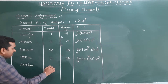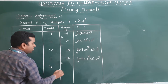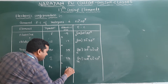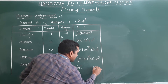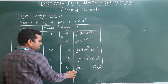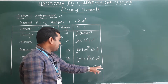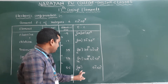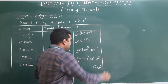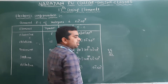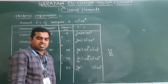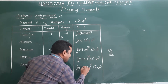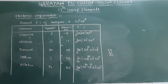The last element is astatine, symbol At. Add 32 to get atomic number 85. The configuration includes [Xe] 4f¹⁴ 5d¹⁰ 6s² 6p⁵. Xenon is 54; 54 + 2 = 56, + 5 = 61, leaving 24 electrons — 10 go into 5d and 14 into 4f orbitals. This completes the electronic configuration of 17th group elements.